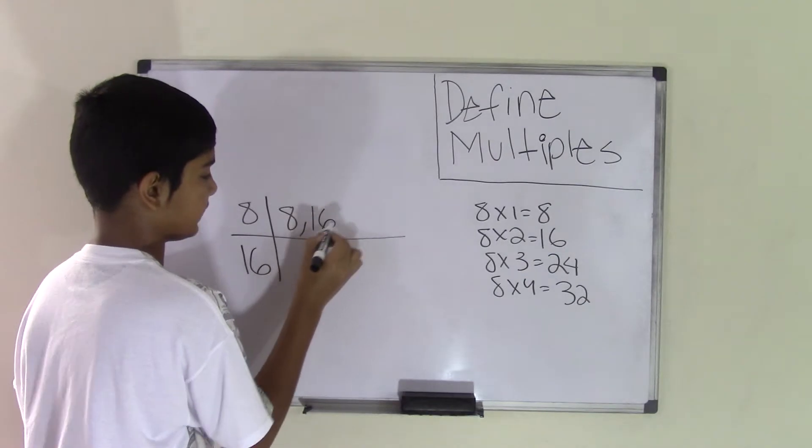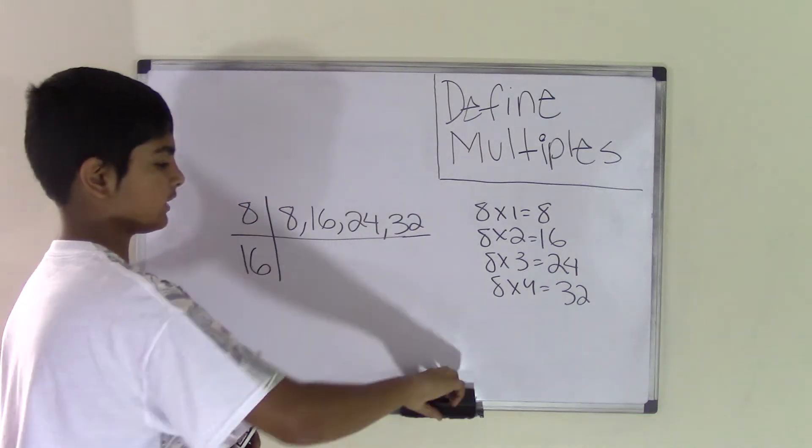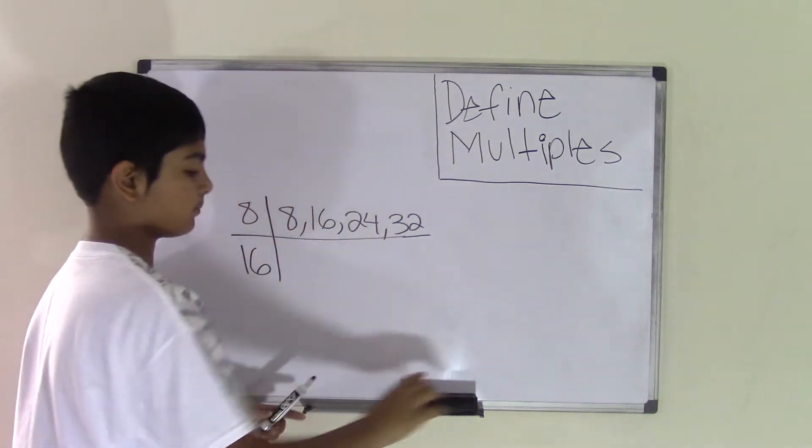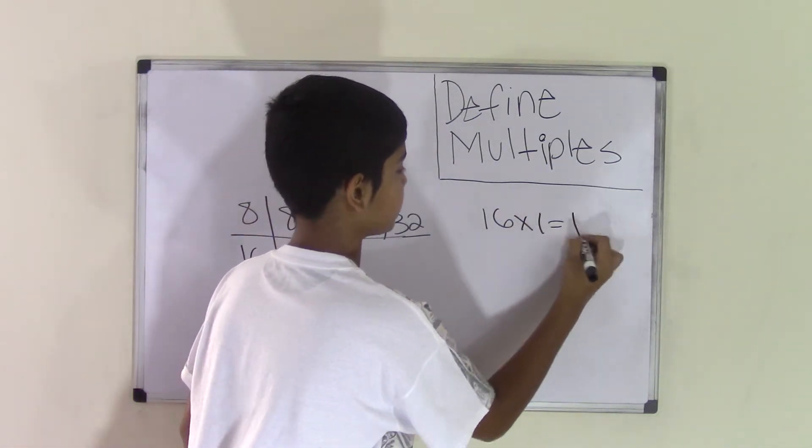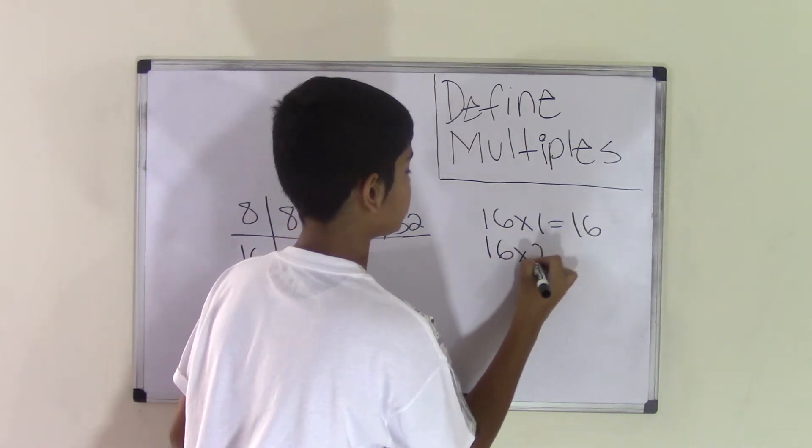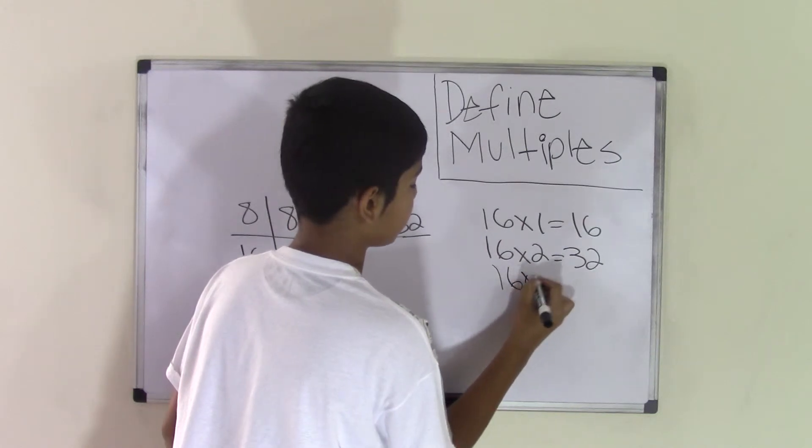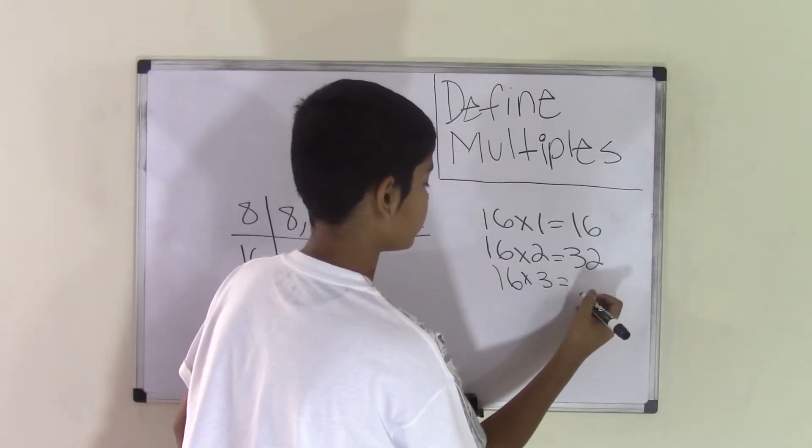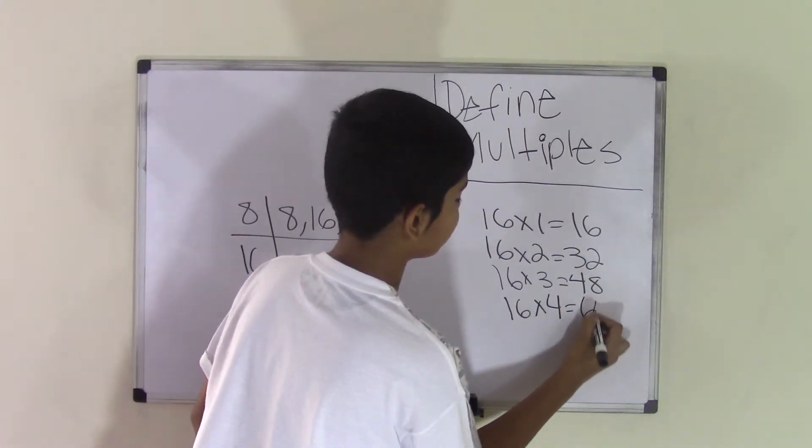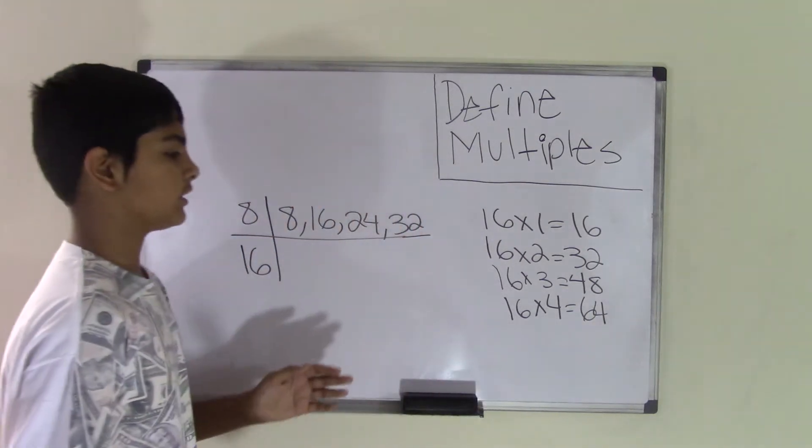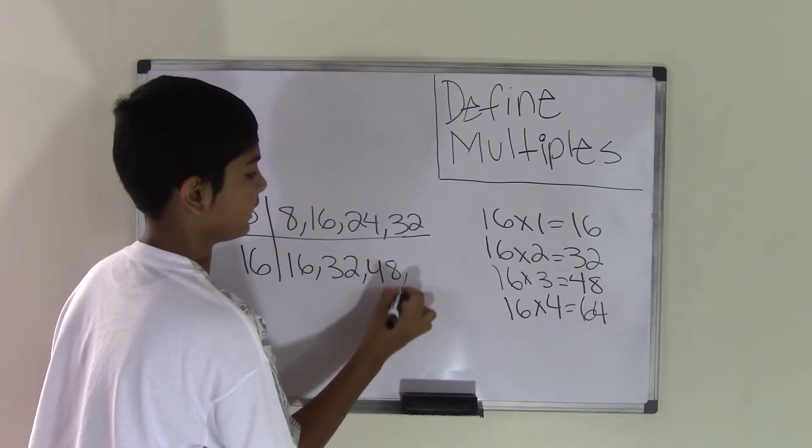8, 16, 24, and 32. Now, let's list some multiples for the number 16. So, 16 times 1 is 16. 16 times 2 is 32. 16 times 3 is 48. 16 times 4 is 64. And so, these are the four multiples for 16: 16, 32, 48 and 64.